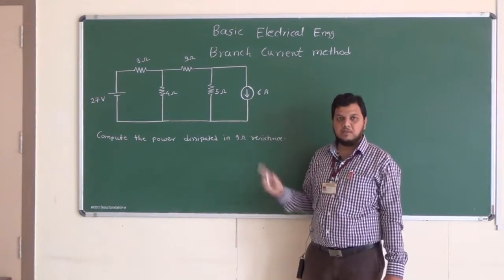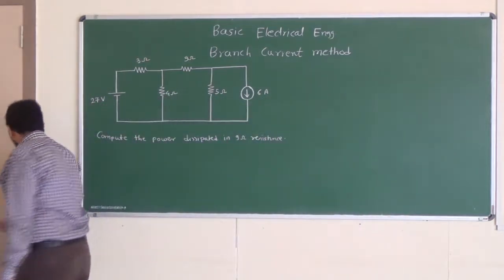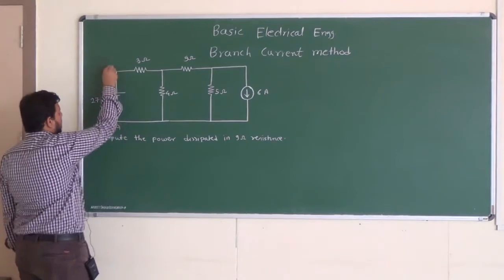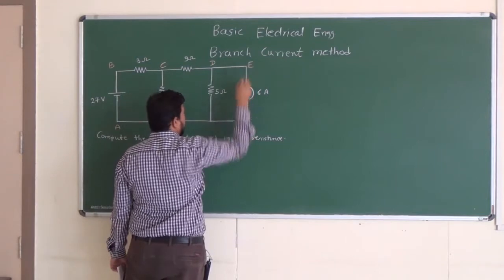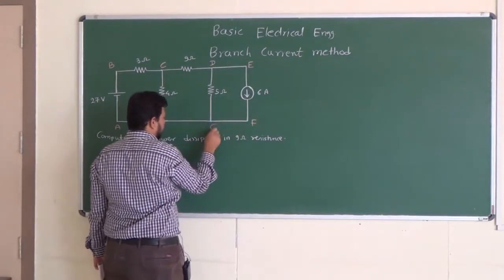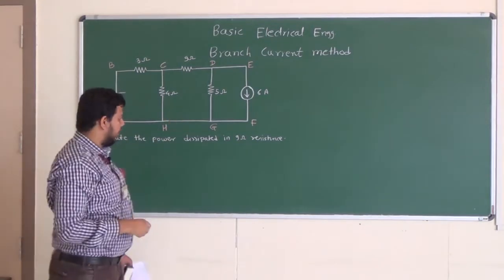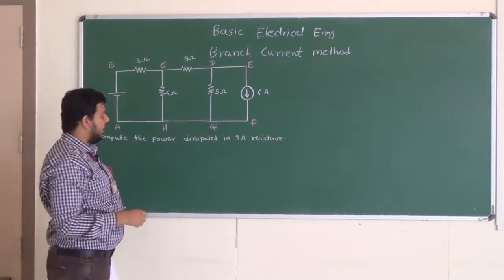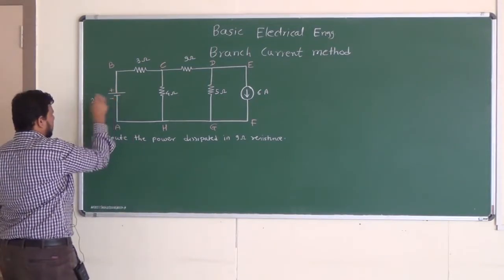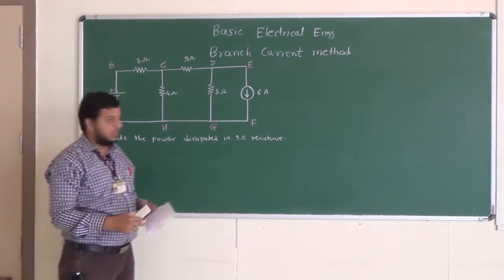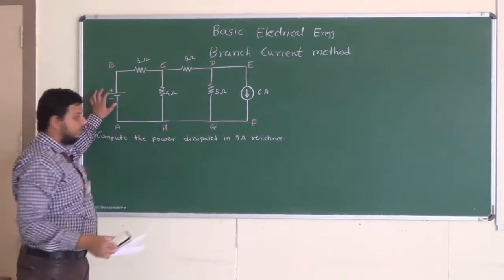We have to follow the same 6 steps. First step: give names to various points — A, B, C, D, E, F, G, H. Second step: indicate the polarity of the voltage source. The long line indicates plus and the short line indicates minus. We should indicate only the polarity of the voltage source, not the current source.